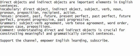Direct objects and indirect objects are important elements in English sentences. Đối tượng trực tiếp và đối tượng gián tiếp là những yếu tố quan trọng trong câu tiếng Anh.